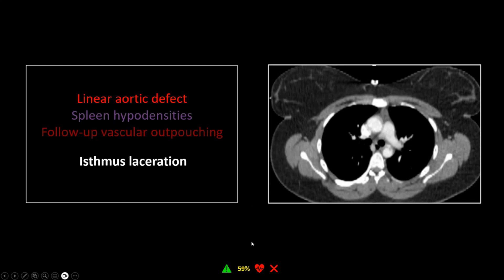Trauma is particularly amenable to this approach to PowerPoints, which is the iconization of relevant elements of the study. Along the bottom, on every case in this collection, you will see four icons or numbers that denote important aspects of the case. The first is the mechanism of trauma. Something like 75% of these are motor vehicle collisions, so you'll see that green triangle pretty frequently. But every once in a while, you'll see a horse, or a gun, or a soccer ball, or whatnot.